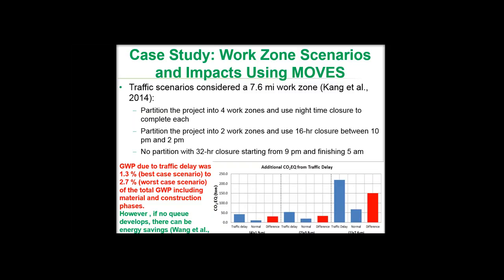The figure here shows the carbon dioxide emissions from normal operating conditions in that section of the highway and the emissions resulting from traffic delay, along with the difference contributed by traffic delay. As you go from left to right, different traffic scenarios indicate the additional carbon dioxide emissions for each scenario.